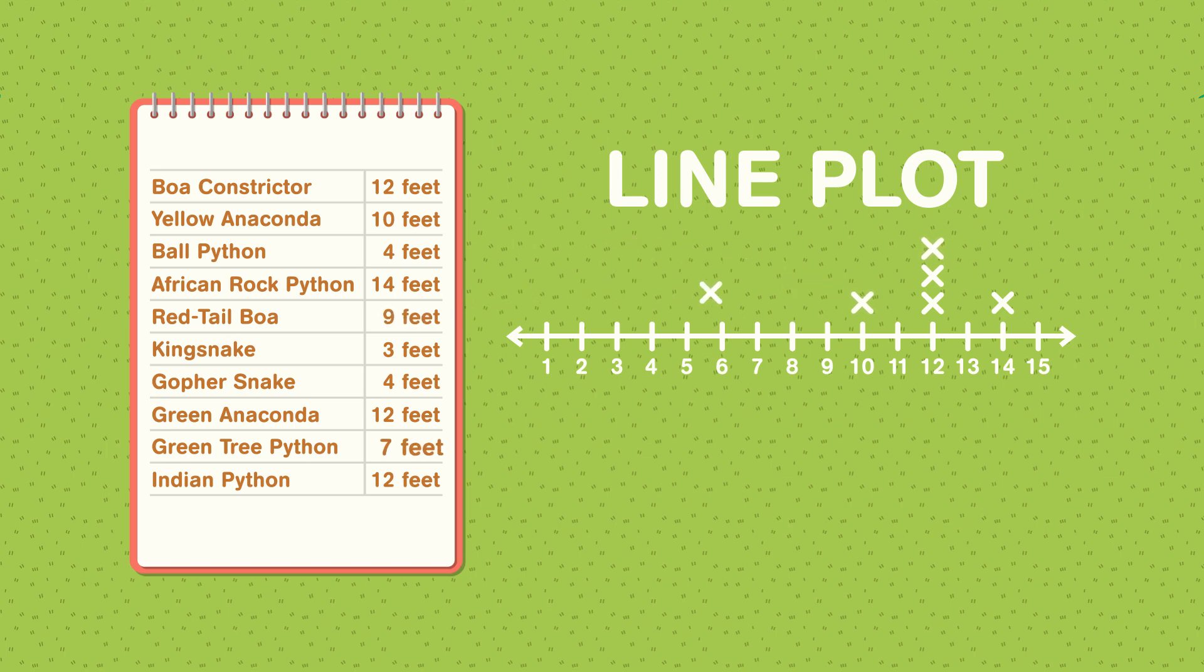By displaying the data in this way, Joaquin can see the measurements of all ten snakes at once. He can see that there are multiple snakes that measure 4 feet long and 12 feet long. He can also identify trends in the data, like the fact that most of the snakes in the reptile room are over 6 feet long.